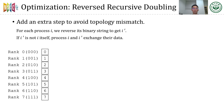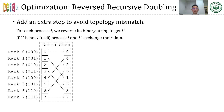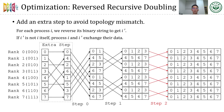The third optimization is reversed recursive doubling, used to avoid topology mismatch. We add an extra step for recursive doubling: for each process i, we reverse its binary string to get i'. If i' is not i itself, process i and i' exchange their data. In this example, rank 1 exchanges data with rank 4 and rank 3 exchanges data with rank 6. In this way, in the last step — which transfers half of the total data — each process only needs to exchange data with its neighbor instead of a far-away process.